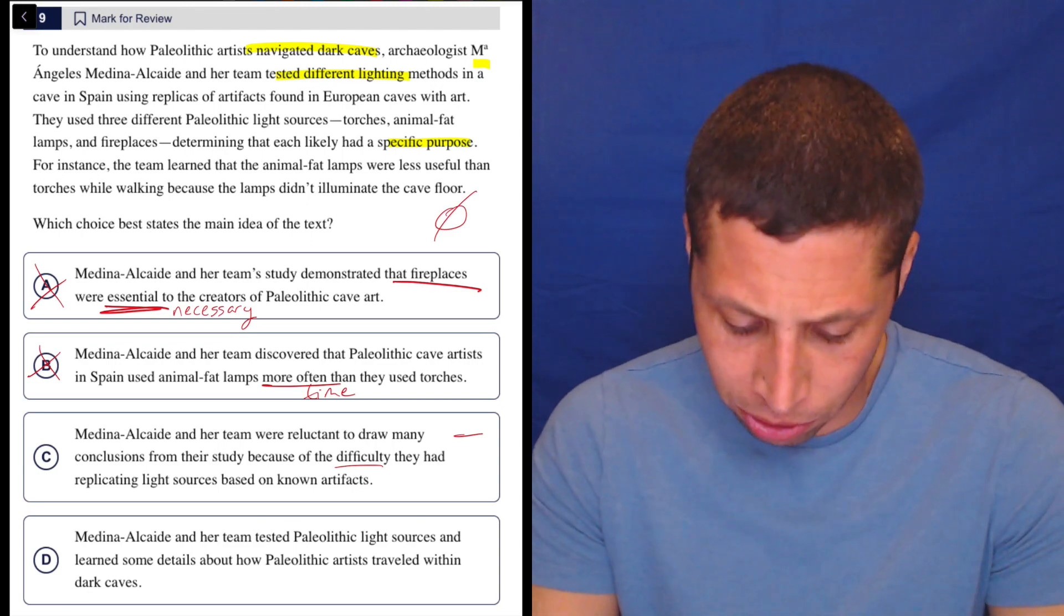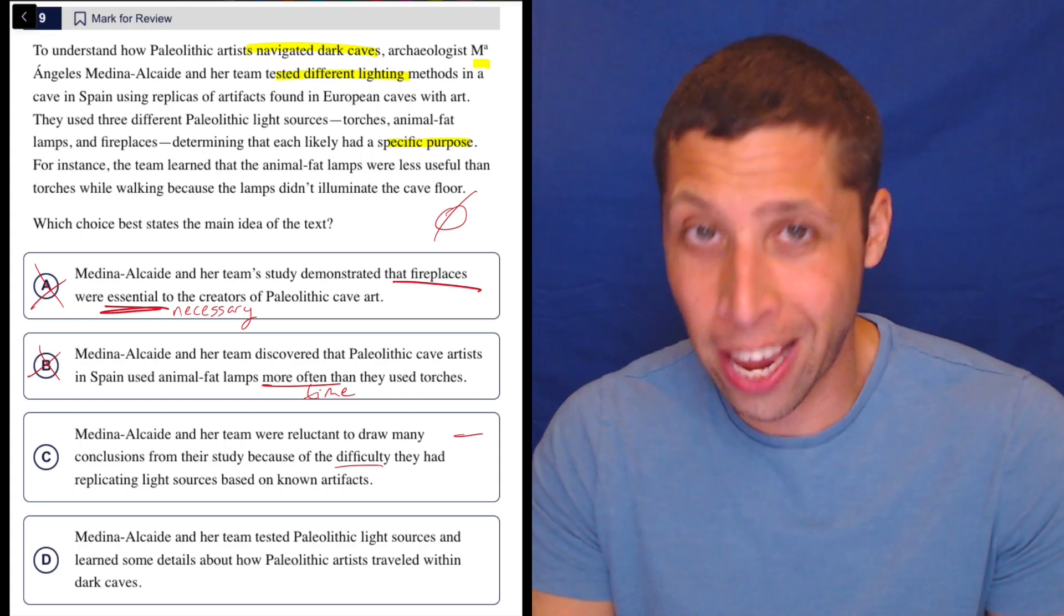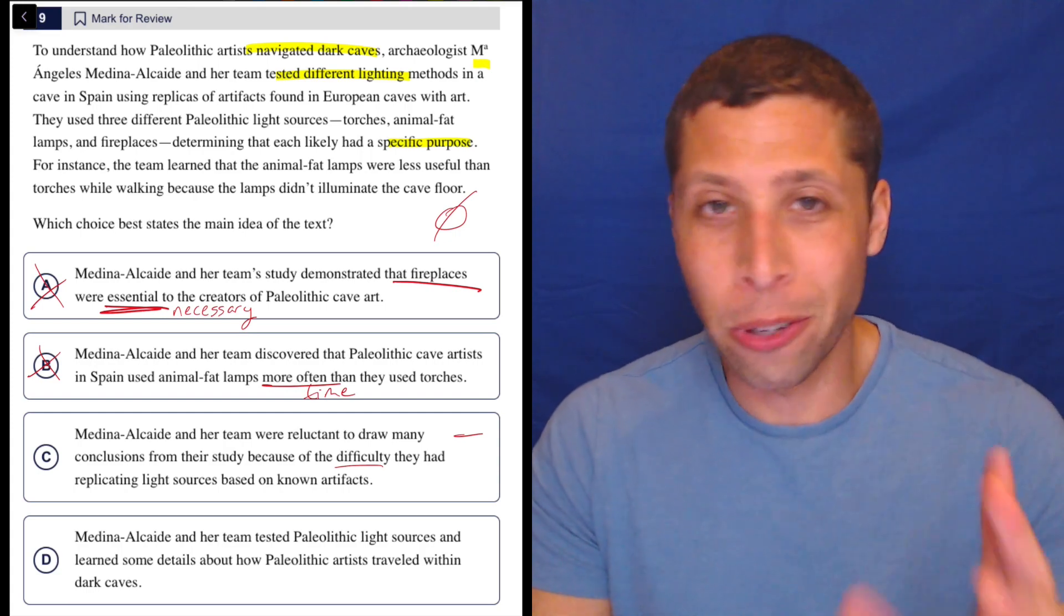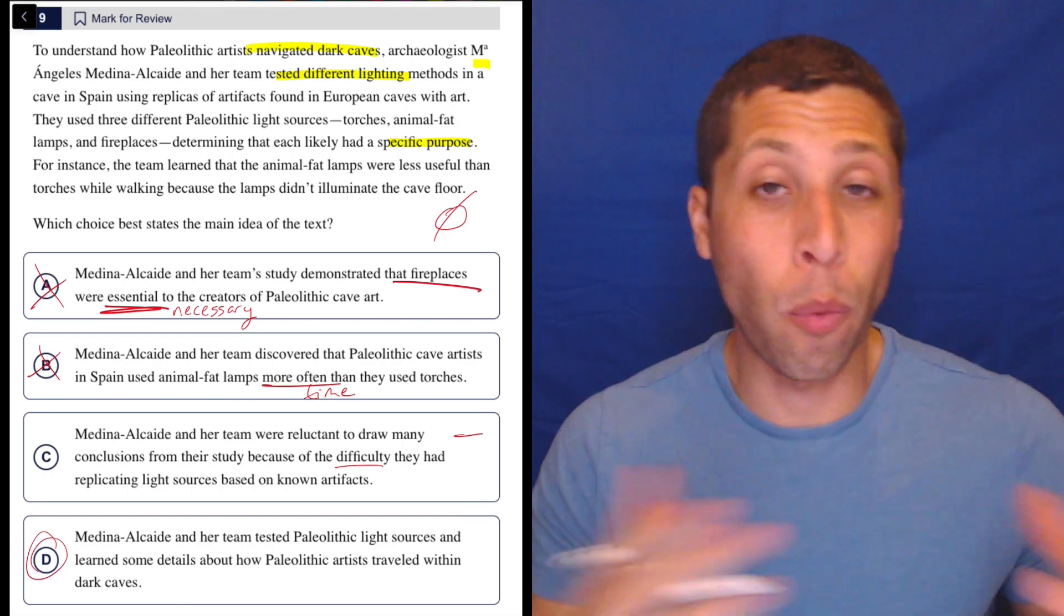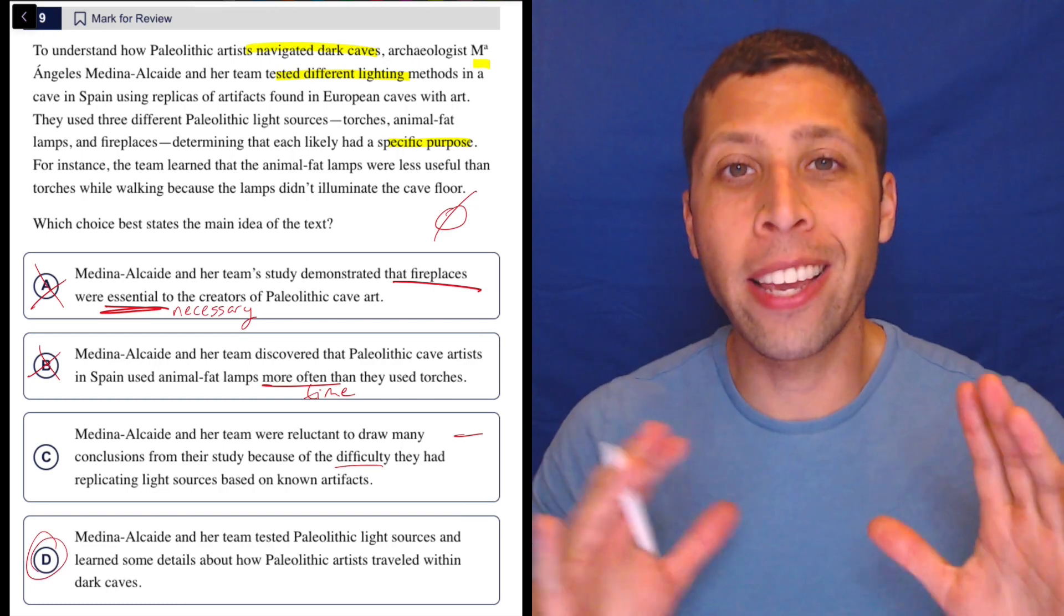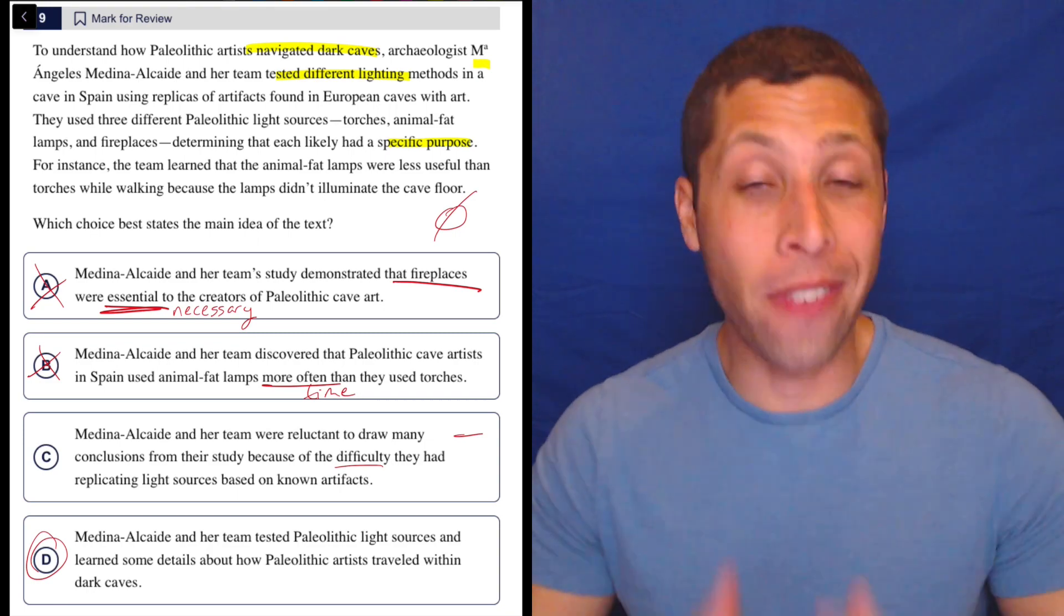These people tested Paleolithic light sources and learned some details about how Paleolithic artists traveled within dark caves. Yeah, they learned some details. Notice, they're not getting into the specifics about the details. They're not saying that they found one thing was better than another. They're just saying they did an experiment. They learned some things from the experiment. Nice and vague and weak.